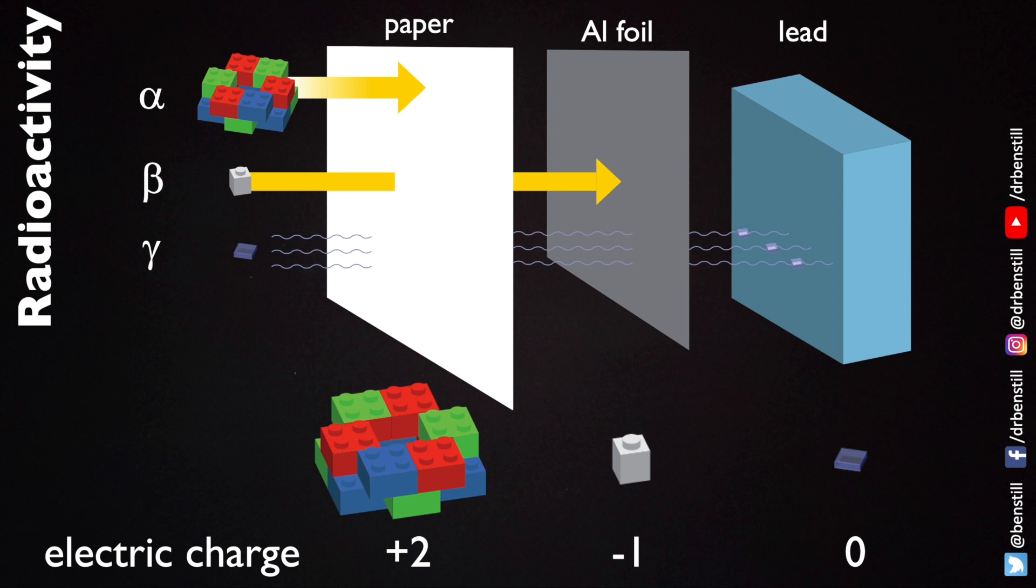Gamma particles of course are the force carriers of the electromagnetic force. So they will eventually lose their energy when they interact with something in the material.